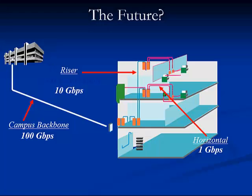Finally, here is a peek at the future of telecommunication cabling with common speeds of gig, 10 gig, 40 gig, and 100 gig Ethernet in the local area network, campus, metropolitan area network, and finally the wide area network.